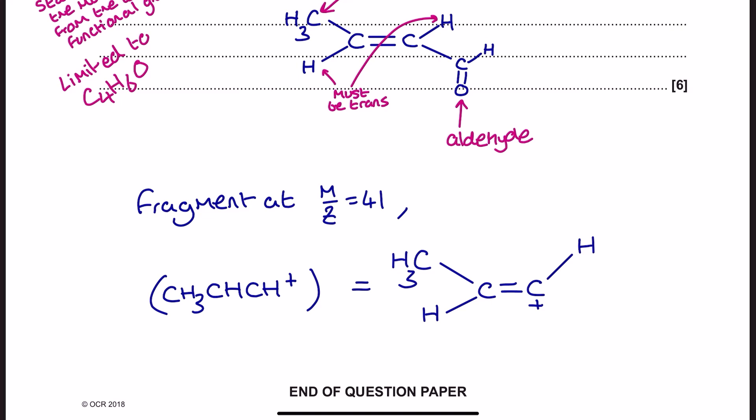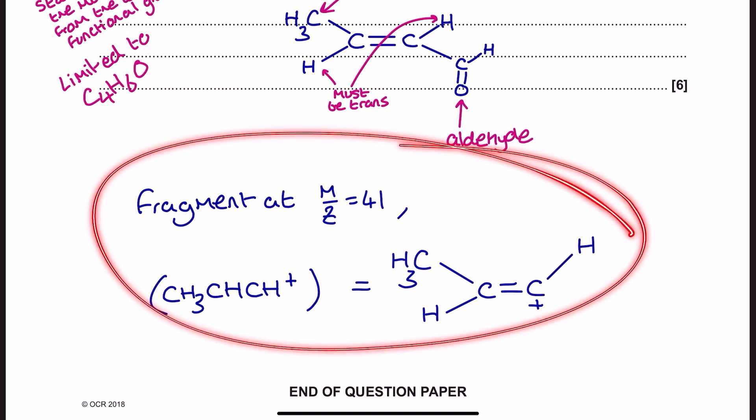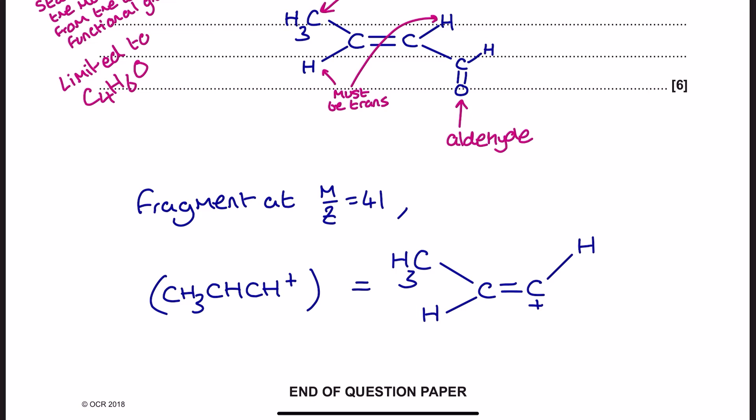It's worth noting that the examiner's report often critiques students for not using the fragment ion peak as instructed correctly in their answer. And this causes people problems in the second year exam as well.